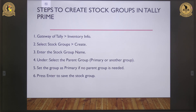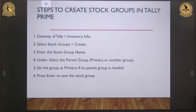Now, these are the steps we need to follow for creating stock groups. We go to the Gateway of Tally and then go to Inventory Information. Under Inventory Information, we select the group and then we can create any group. Under the group name, the group can be the parent group or primary group. If there is no subgroup, we click on primary group only and then save this information. In this way, we can create a stock group in TallyPrime.